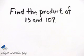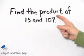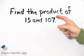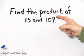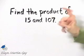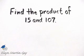This time let's find the product of 15 and 107. We need to remember what the word product means. Product means to multiply. So we multiply 15 and 107.